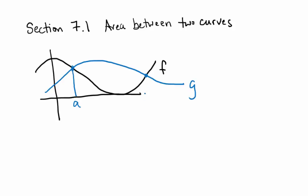So f and g are intersecting at a and b here. If I were to integrate from a to b the function g with respect to x, what would that represent on this graph? The area under g all the way down to the x-axis.